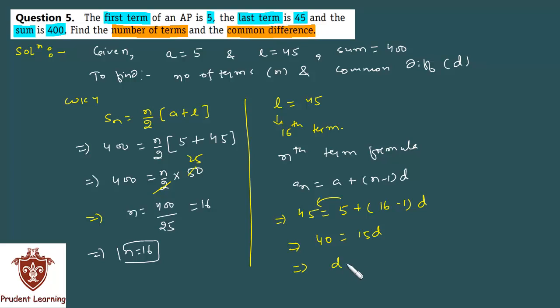Finally you get D is equal to 40 upon 15. Cancel this by 5: 5 into 3 and 5 into 8, which gives you finally D is 8 by 3. So for the given arithmetic progression, number of terms is 16 and common difference D is 8 by 3.